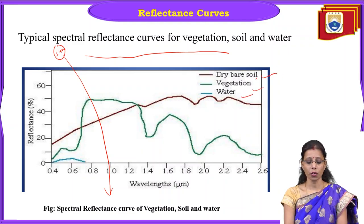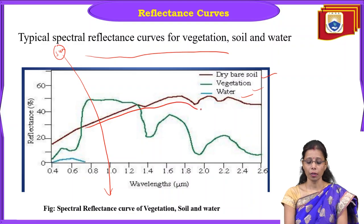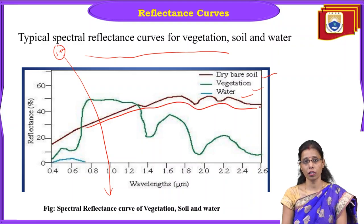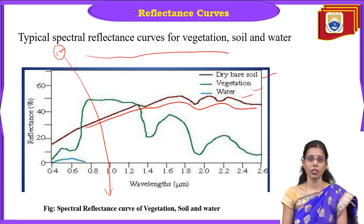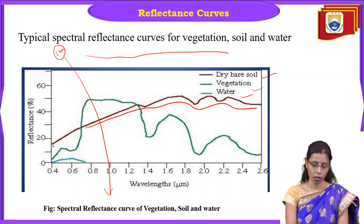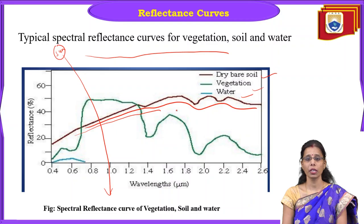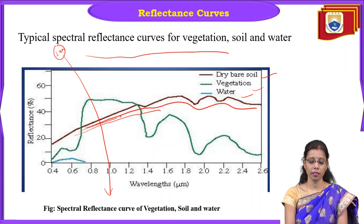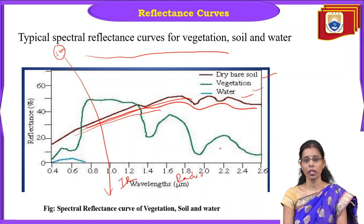Dry bare soil has a very rough texture because it is totally dry. If it is wet soil, the texture will be smooth. Dry bare soil does not show much peak and valley configuration — it is constantly increasing in the infrared region. It just keeps on increasing and does not go up and down significantly.